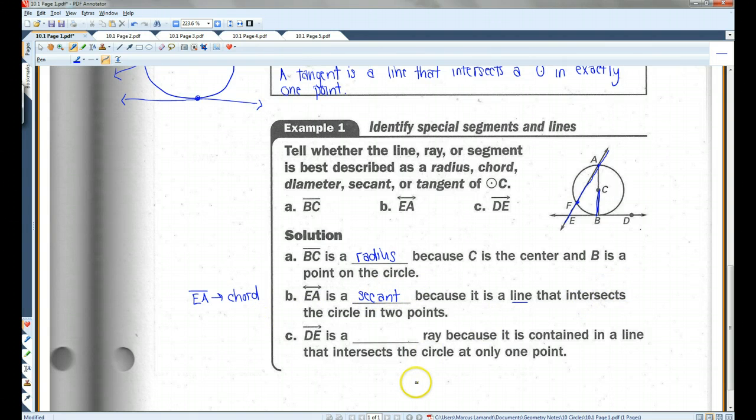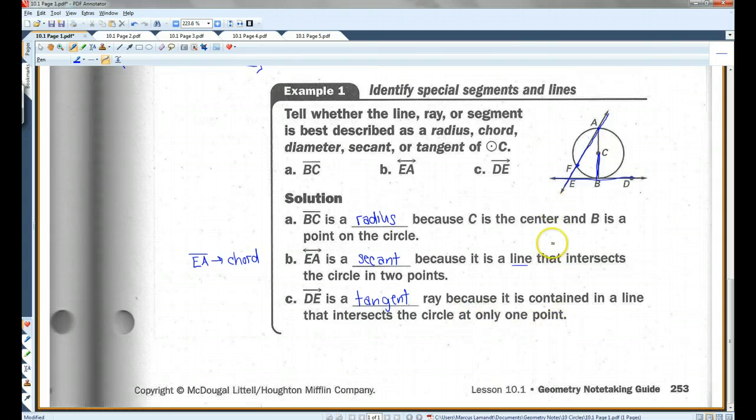But if they had asked for this, you would have written chord instead. Ray DE, that's this here. Ray DE is a tangent ray because it is contained in a line that intersects the circle at only one point. Let's go on to page two.